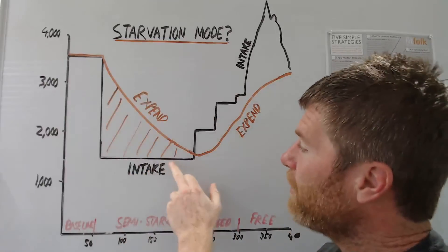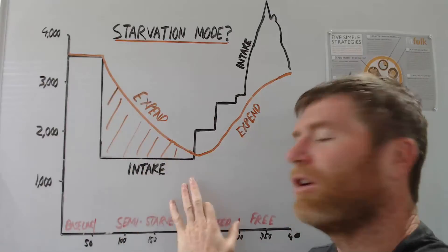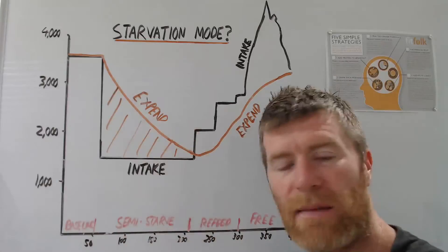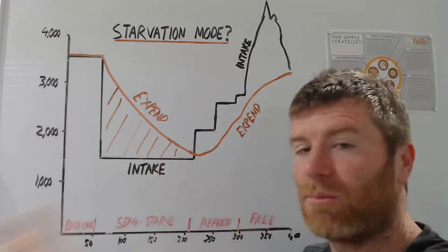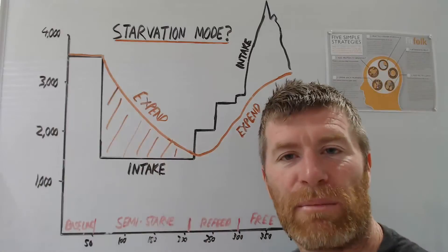But when they were 5.5% body fat right towards the end, they were going crazy thinking about food, nothing else, they're keeping them walking miles a day, they were still losing body fat.